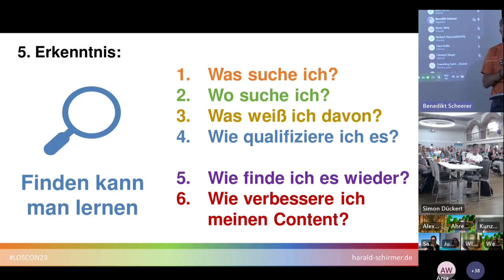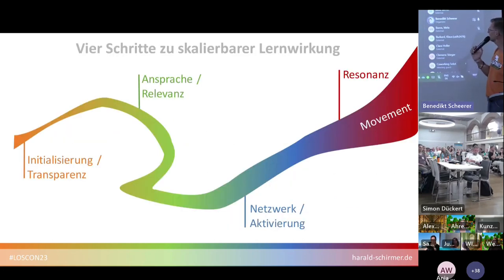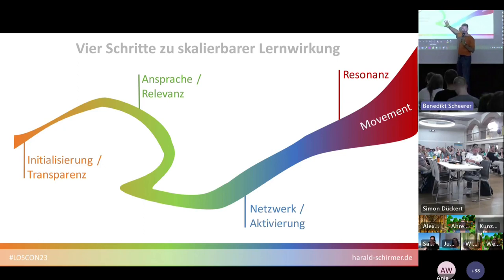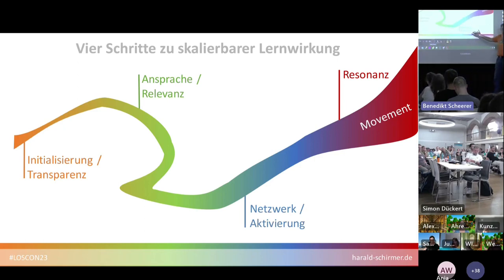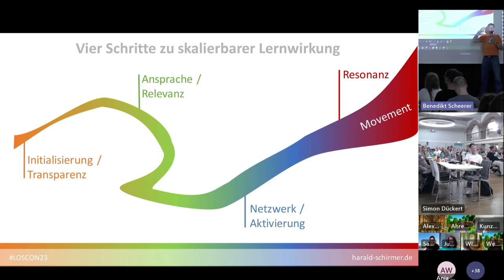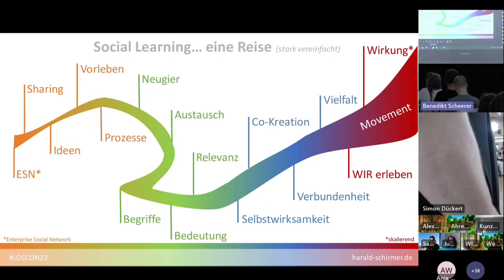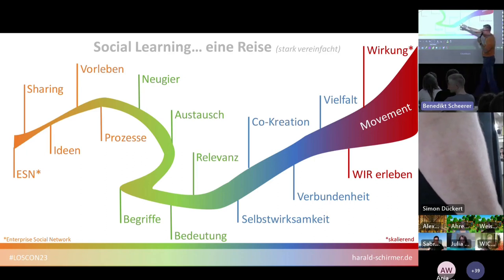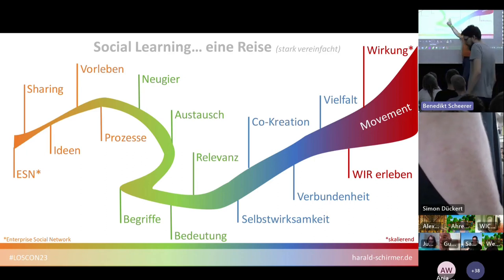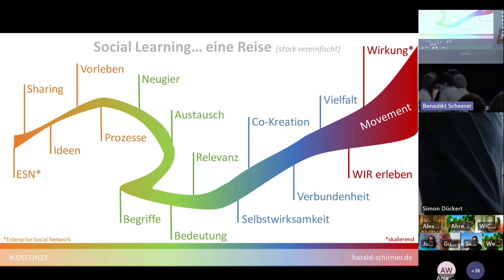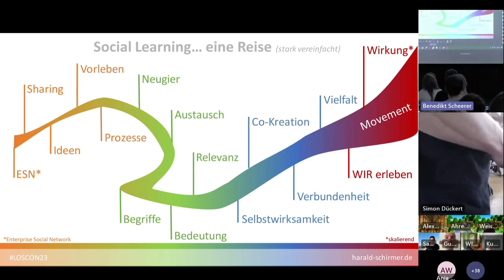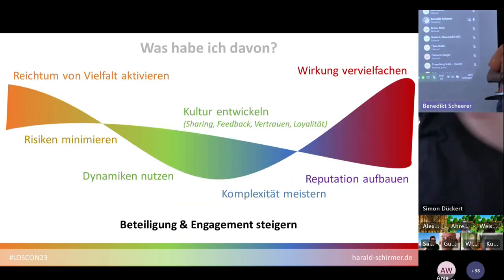How do you improve your own content so it can be better found? The learning journey in social learning has four steps: once I've learned searching and finding, in a community and network it's about opening up — initializing the network through transparency and setting an example. Then you move toward your target, look at different processes, and move from 'I have a question' to developing a network, and ultimately joining a movement. Thank you very much.